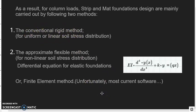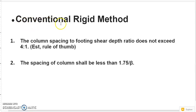So before we design a column combined footing, we should always check. The conventional rigid method, you can use two ways. The first way is to check the column spacing to make sure the column spacing to the footing shear depth ratio does not exceed 4-to-1.